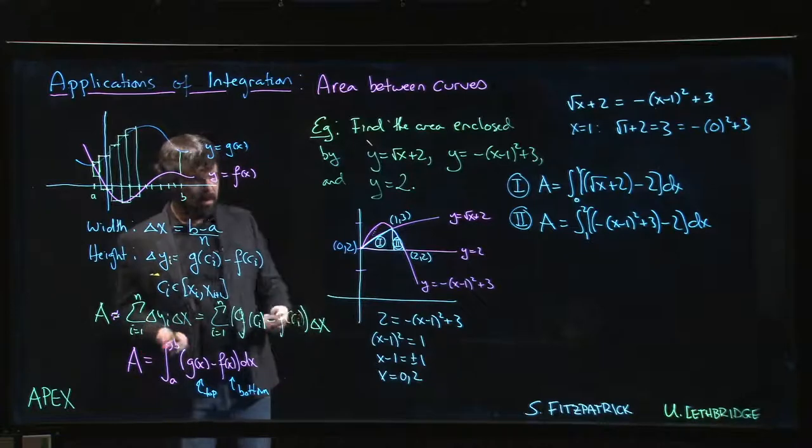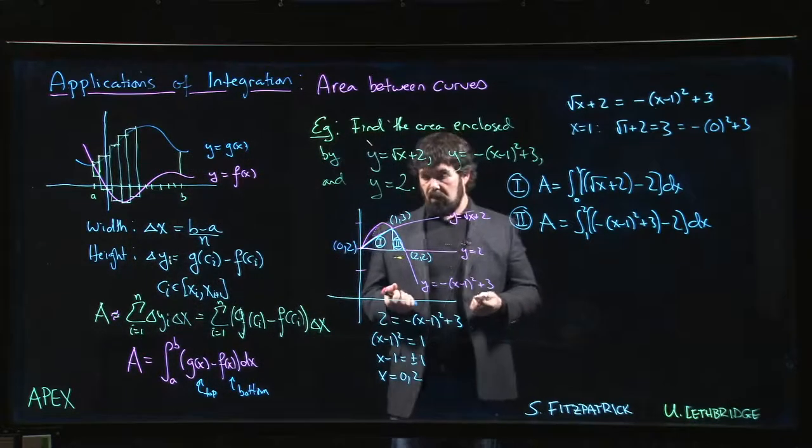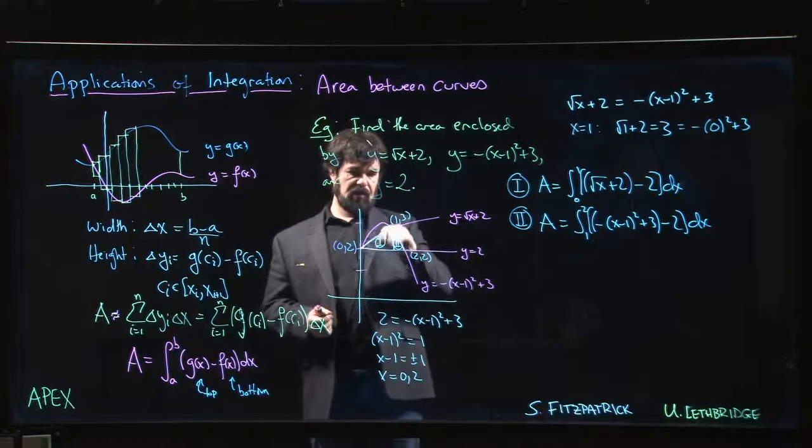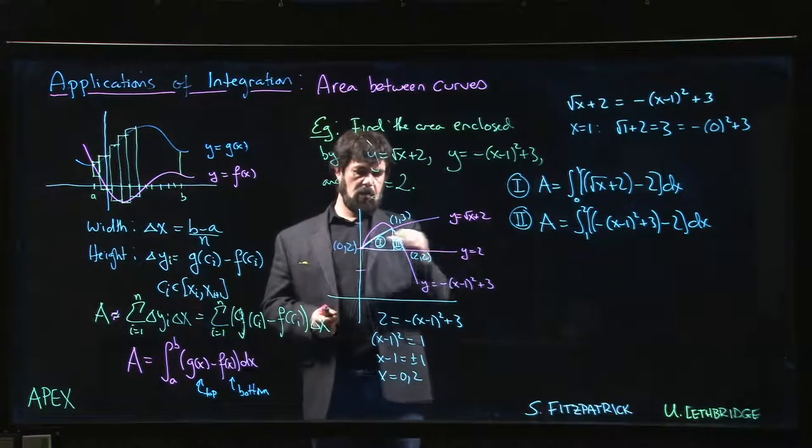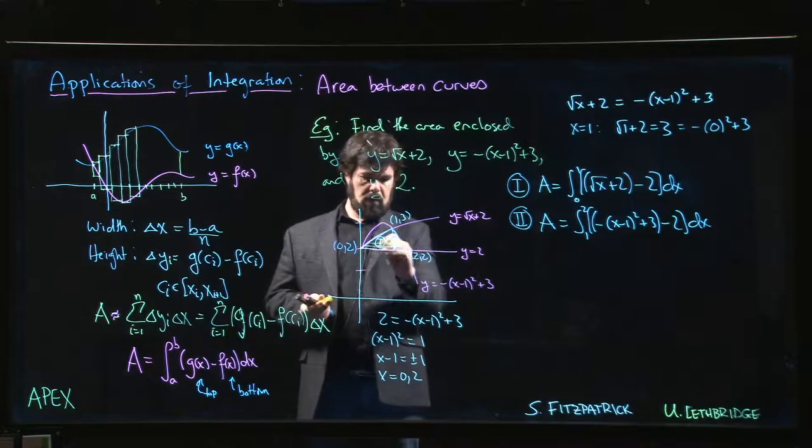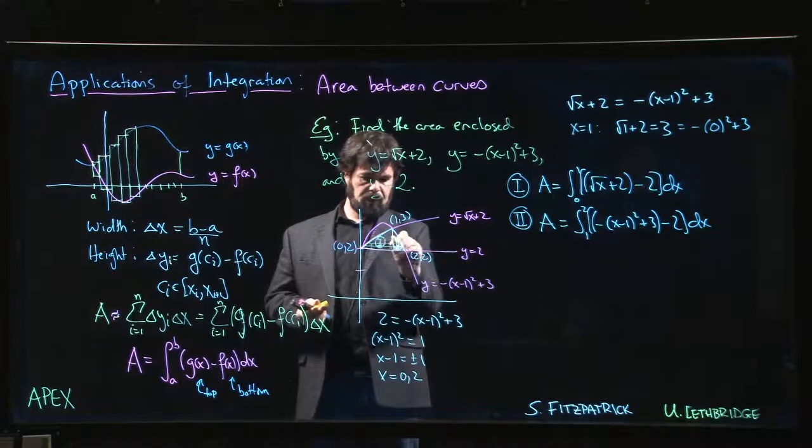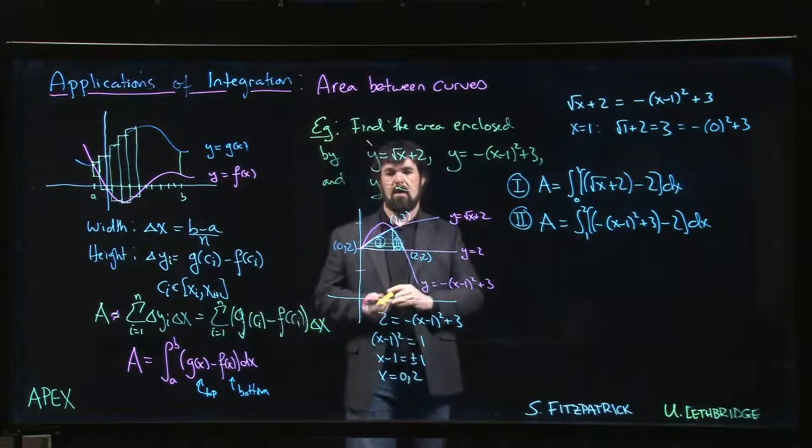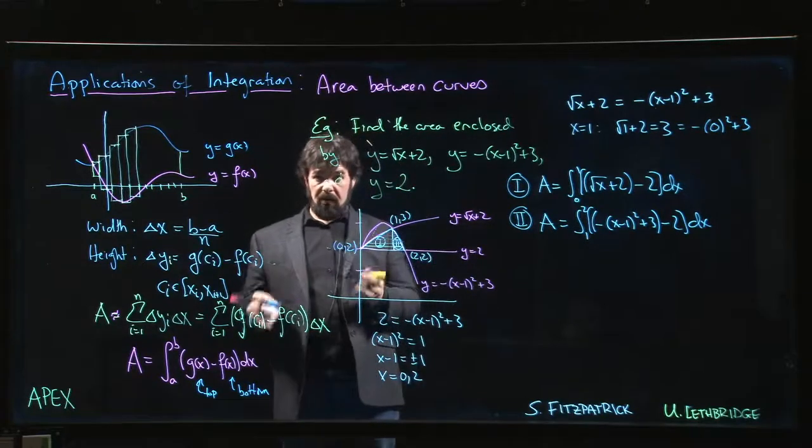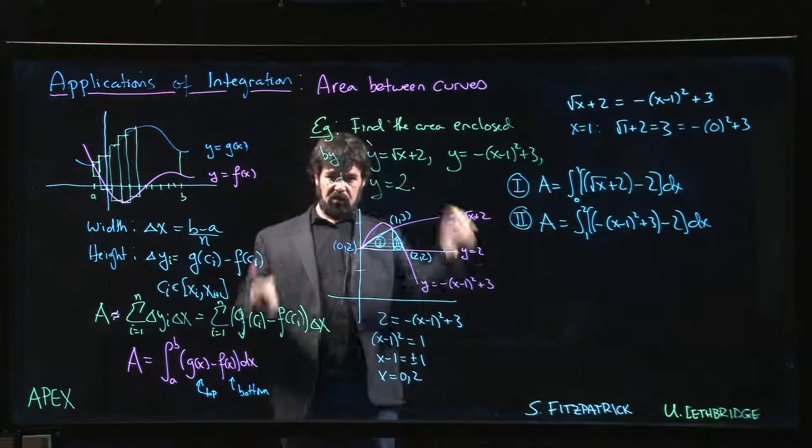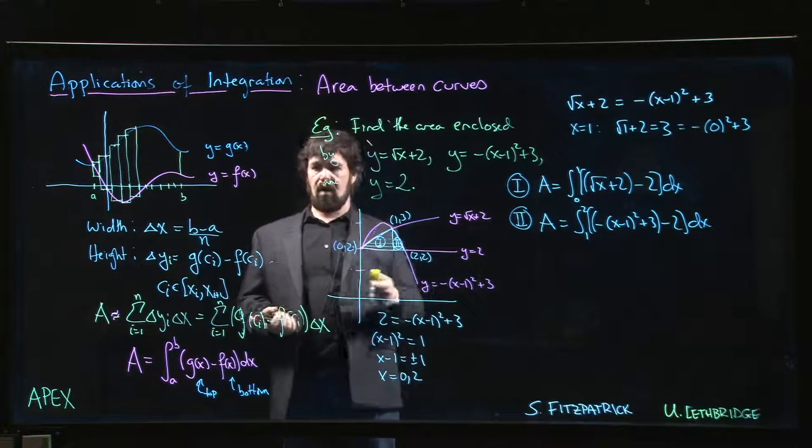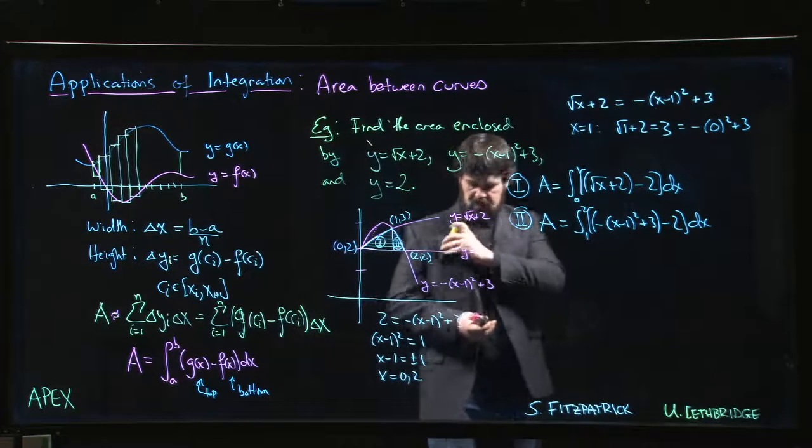But actually there's a more convenient way sometimes to set this up, which is rather than thinking of your area as these rectangles aligned this way, we could think about rectangles that are aligned this way. We could actually think about tracing the area out sort of like this. Okay, and orient things so that we're actually thinking now of y as the independent variable and x as the dependent variable. We're just going to flip the picture, just turn it and look at it from the other angle. But of course if we want to do that, well then we have to get x as a function of y.